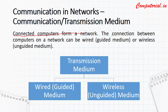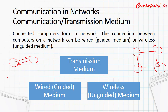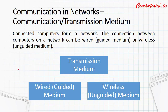Connected computers form a network. The connection between computers on a network can be wired or wireless. When a few computers are connected to each other, it is termed as a network. For example, four computers or four nodes connected to each other form a simple network. Similarly, two mobile phones connected via Bluetooth or Wi-Fi can also be termed as a network.